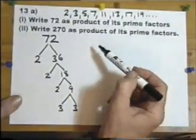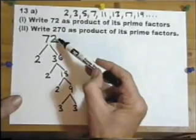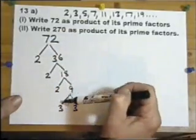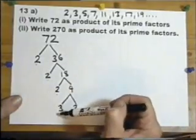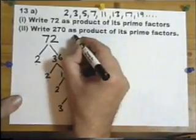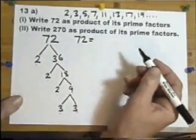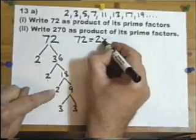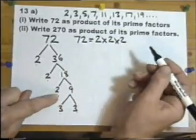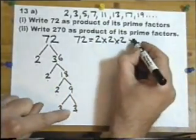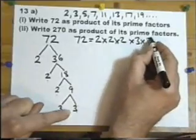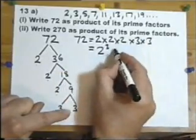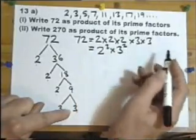So a prime factor tree is to start with the number and to split it into its prime numbers, so that the end of each branch is a prime number. That means to say that 72 equals 2 times 2 times 2 times 3 times 3, which you can write as 2 to the power 3 times 3 to the power 2.